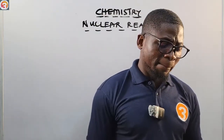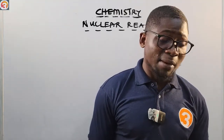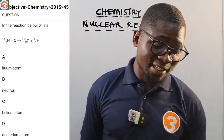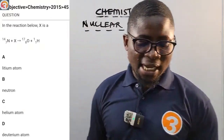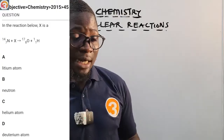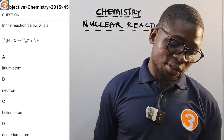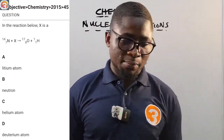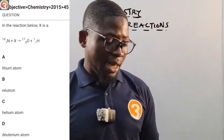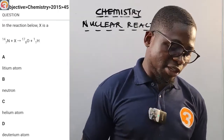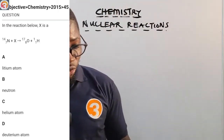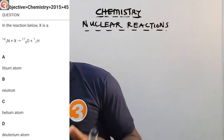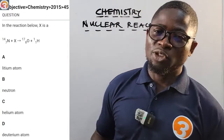Let's see a JAMB past question from the app — 2015, number 45. In the reaction below, nitrogen plus X gives oxygen plus a proton (hydrogen-1). What is X? Options: A) lithium atom, B) neutron, C) helium atom, D) deuterium. We'll come back to this question after the lesson.